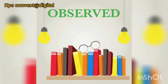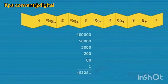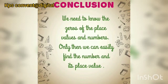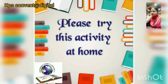We observed that the given number is 453,281. So what did we learn today? We need to know the zeros of the place values and the number. Only then we can easily find what the number and its place value is. Please try this activity at home.